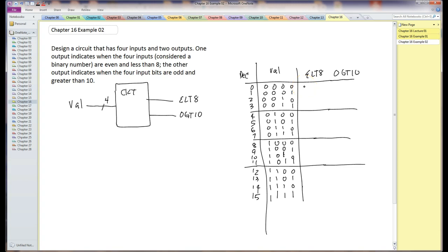This first circuit here indicates when its input values are even and less than 8, and I will list this as MSB and LSB, just to be sure.